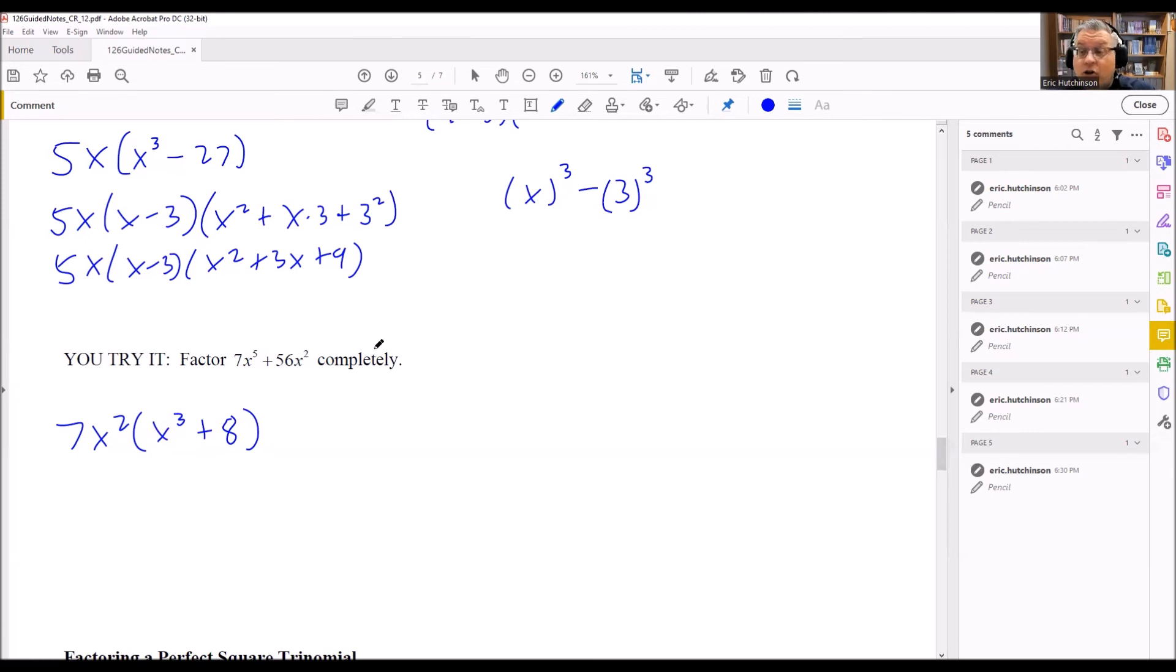We have a sum of cubes this time. The sum of cubes factors into this here. Okay, so we have a plus b, and we have a squared minus ab plus b squared. So that is what we're going to do here.